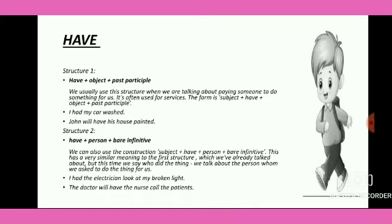The first causative verb is 'have'. Structure one: have plus object plus past participle. Past participle means the third form of the verb. We usually use this structure when we are talking about paying someone to do something for us. It is often used for services.